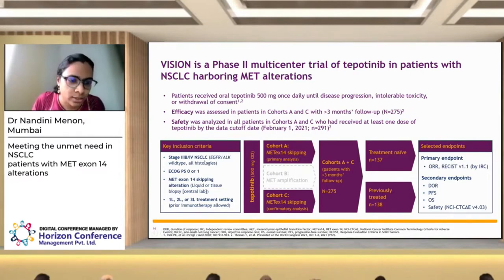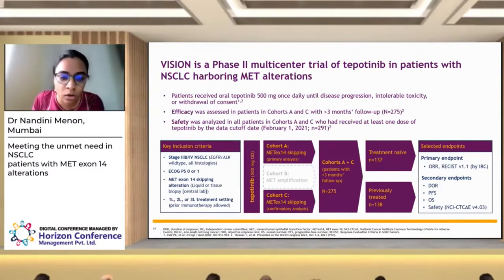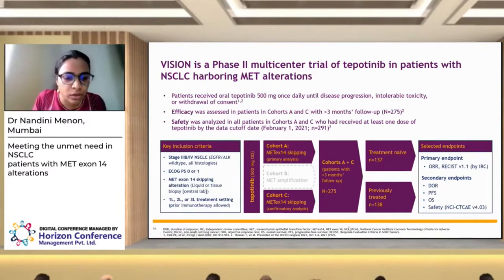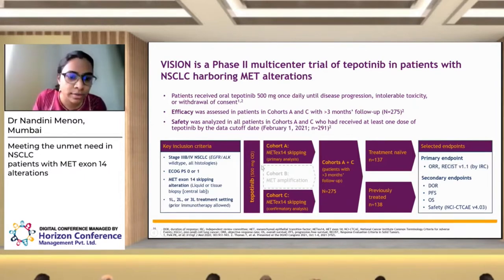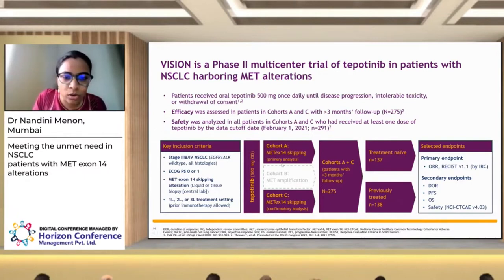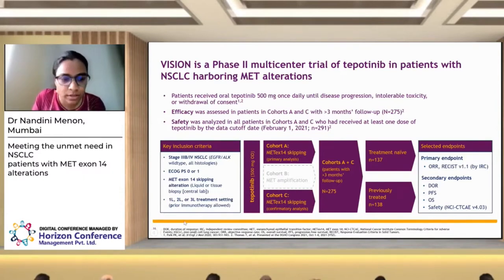The VISION trial inclusion criteria included stage 3B or 4 non-small cell lung cancer, EGFR and ALK mutation-negative, all histologies included, and required a MET exon 14 skip alteration on either liquid or tissue biopsy. Patients were PS 0 or 1, with any line of therapy allowed including newly diagnosed or up to two prior lines including prior immunotherapy. Tepotinib was given as 500 mg orally once daily until disease progression or intolerable toxicity. There was an initial cohort A published in NEJM, an expansion cohort C for MET exon 14 NSCLC, and a small cohort for MET-amplified patients.